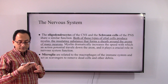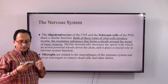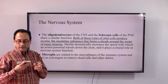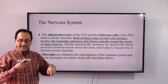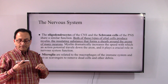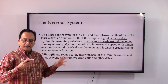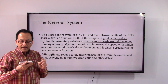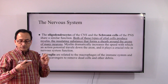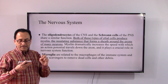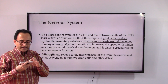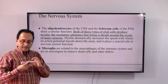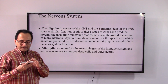Both oligodendrocytes and Schwann cells produce myelin, which wraps around the axons of many neurons — as we saw in our previous discussion of processes within neurons. The next type is microglia, which are related to the immune system. They help remove dead cells and other debris.